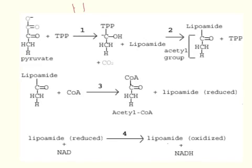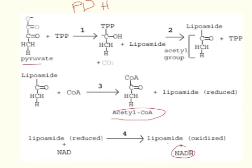So how does pyruvate dehydrogenase work? Pyruvate dehydrogenase is the enzyme that takes pyruvate and transfers it to acetyl-CoA and NADH. Now depending on the textbook you read, it's going to say that this is either a three-step process or a four-step process. This figure obviously has four steps, but the first step is decarboxylation, the second step is a reduction, the third step is an oxidation, and then the last step is to oxidize the lipoamide to NADH.